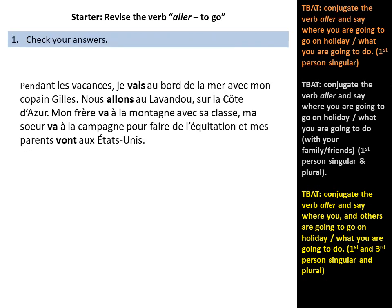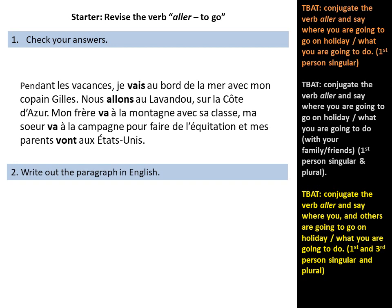Check your answers. Pendant les vacances, je vais au bord de la mer avec mon copain Gilles. Nous allons au Lavandou sur la Côte d'Azur. Mon frère va à la montagne avec sa classe. Ma soeur va à la campagne pour faire de l'équitation. Et mes parents vont aux États-Unis. Now try and write the paragraph out in English. Pause the video, complete the work and then continue for the answers.